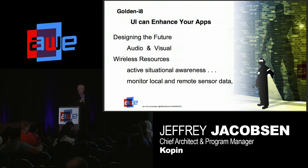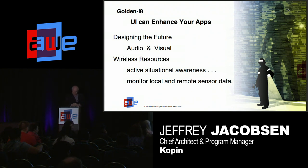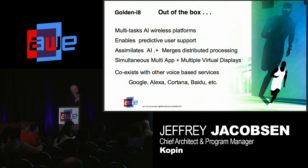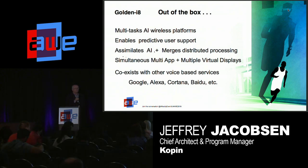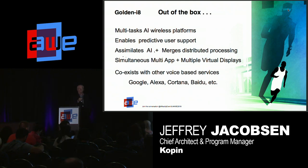You want to actively monitor your situational awareness — local and remote sensor data, whether from the tools and headset you're using or the ambient environment you're working in. Out of the box, this UI multitasks AI wireless platforms. You designate the types of AI platforms you're interested in using, and it monitors them based on your geographical location as well as availability and signal strength. It enables predictive user support. It assimilates AI and merges distributed processing, so when using this user interface, you don't necessarily know where the service is coming from.